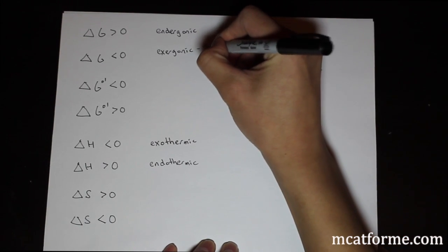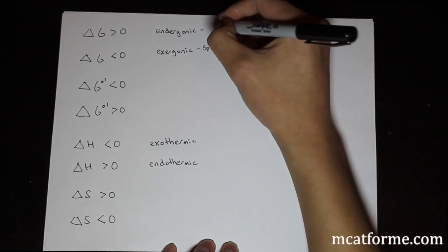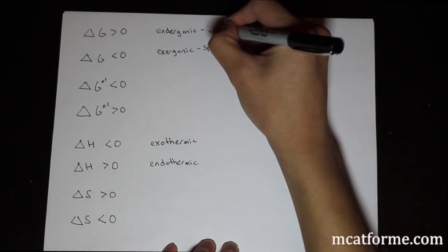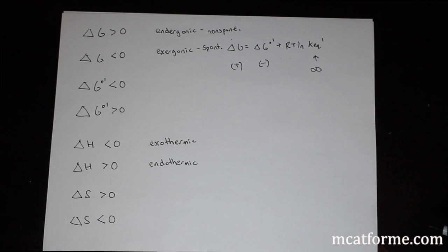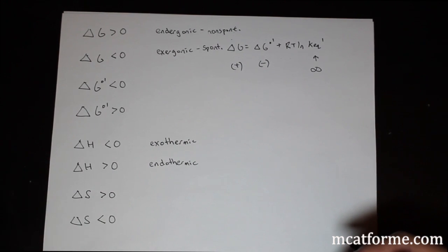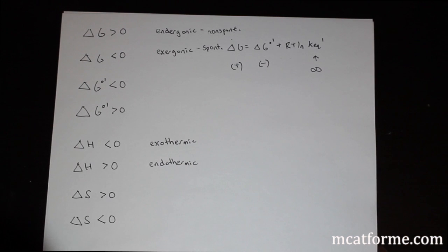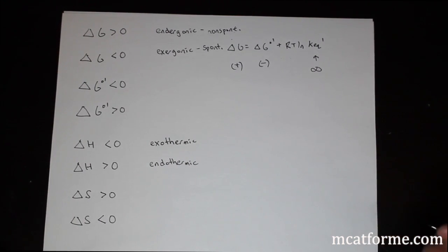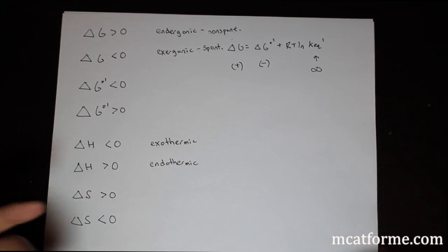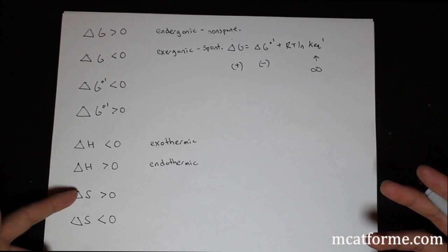From delta G: exergonic (ΔG < 0) means spontaneous; endergonic (ΔG > 0) means non-spontaneous — it won't proceed in the forward direction spontaneously. For entropy: ΔS greater than zero means greater disorder; ΔS less than zero means less disorder. In nature, we always favor a positive delta S.